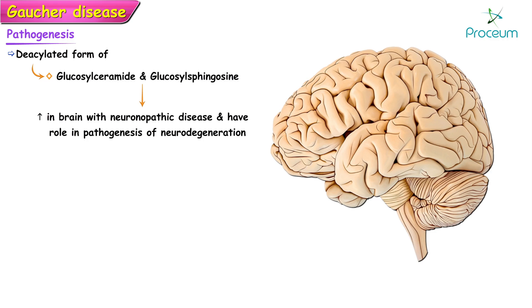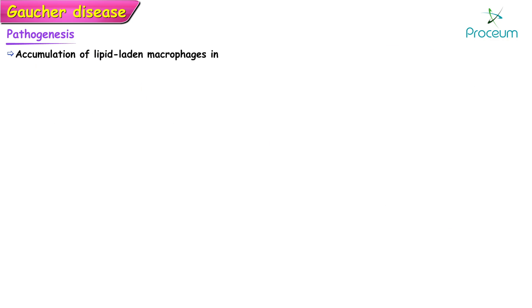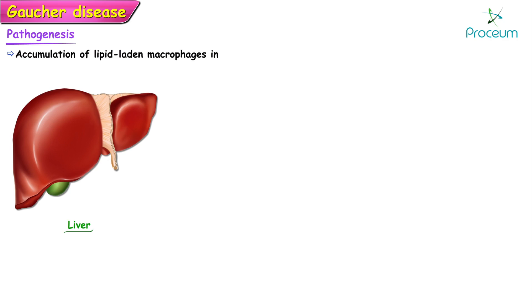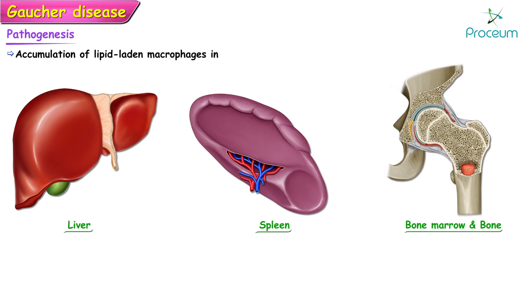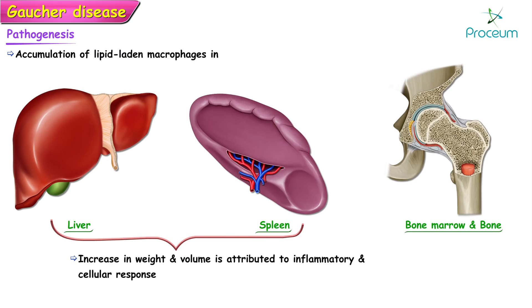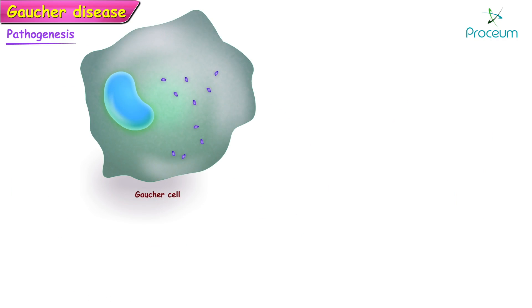The clinical manifestations of Gaucher's disease result from accumulation of lipid-laden macrophages in the liver, spleen, bone marrow, bone, and other tissues and organs. The additional increase in organ weight and volume is attributed to an inflammatory and hyperplastic cellular response, and the pathologic lipid accumulation in macrophages accounts for less than 2 percent of the additional tissue mass in the liver and spleen.